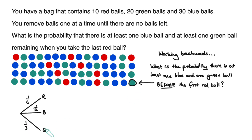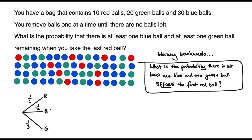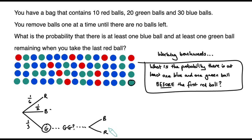Suppose that first ball is a green ball. The key simplification is that there may be more green balls after it, but we can ignore them — all we're interested in is whether the next non-green ball is red or blue. If it's blue, the condition is satisfied; if it's red, it isn't. So given the first ball is green, the probability we see a blue ball before a red ball is 30 divided by 30 plus 10, which is 3/4. The probability we see a red ball before a blue ball is 10 over 40, which is 1/4.